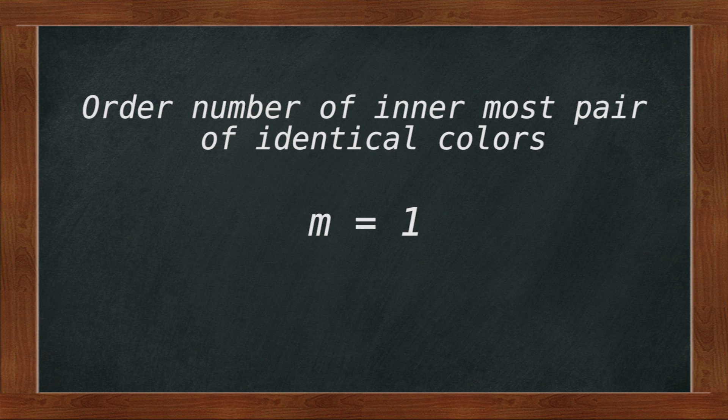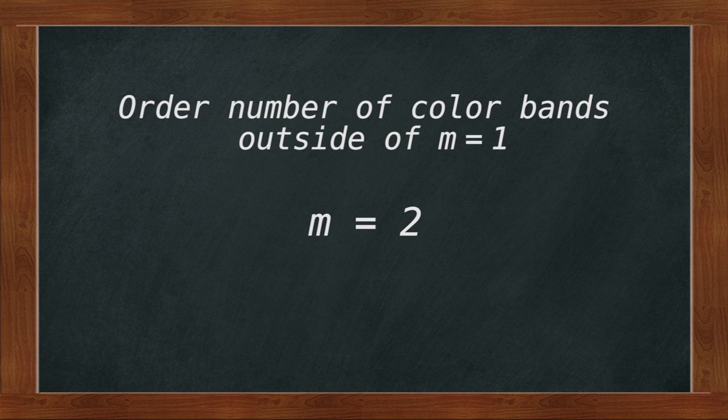Finally, M represents the order number. The innermost pair of identical colors is order number 1, or M equals 1. Those color bands just outside of M equals 1 are order number 2, or M equals 2.